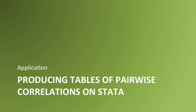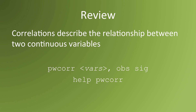Let's review. Correlations describe the relationship between two continuous variables. To get pairwise correlations, we use the command pwcorr and the list of variables we want correlated. The option OBS will ask Stata to report the number of observations upon which our correlation estimates are based. And SIG will ask Stata to perform a significance test to determine whether we have good evidence that two variables have a non-zero pairwise correlation. For more information, type help pwcorr in the Stata command window.